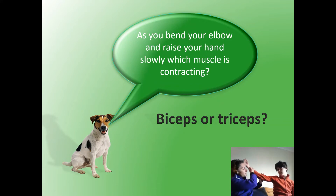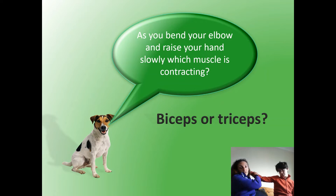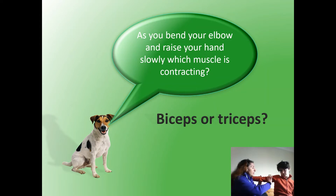But then when you straighten your arm, the opposite muscle is working instead. So underneath here, you have what's called a tricep. And you can feel your own tricep on the bottom of your arm. That means the tricep is contracting as you straighten your arm. So when you flex your elbow, your bicep is contracting; when you straighten your arm, your tricep is contracting. We call this working in opposition — the biceps work in opposition to your triceps.